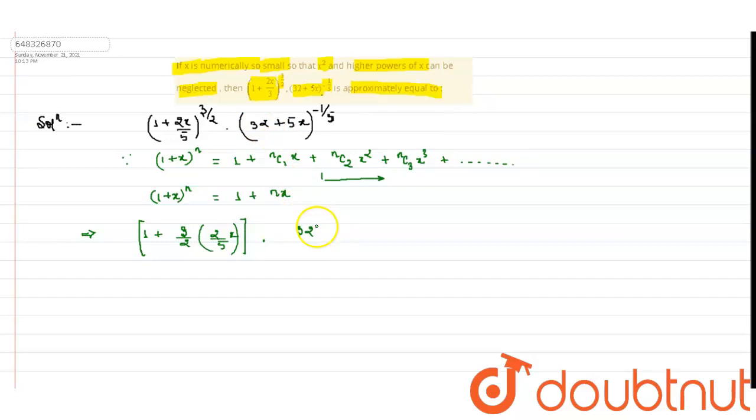Inside the bracket we are left with 1 plus 5 by 32x, and the power minus 1 by 5.